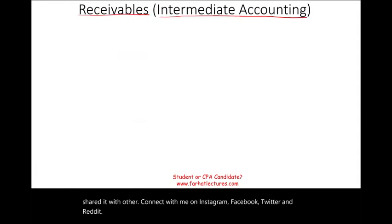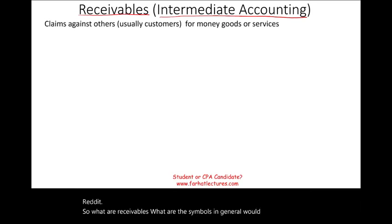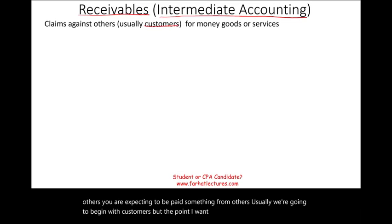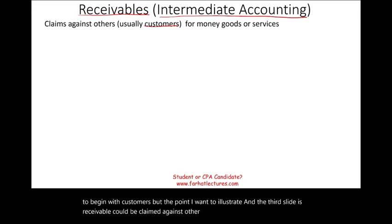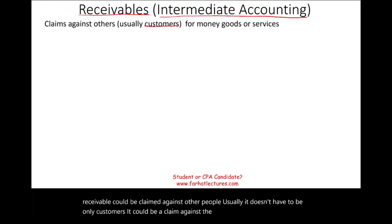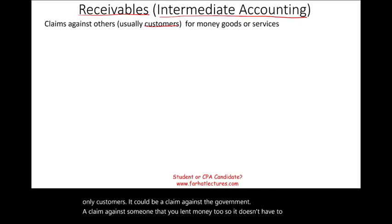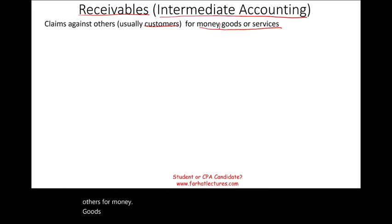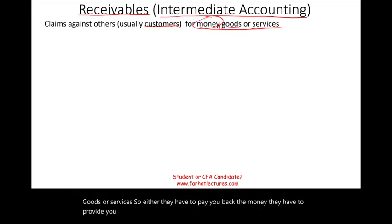So what are receivables? They are claims against others — you are expecting to be paid something. Usually we deal with customers, but receivables could be claims against the government or someone you lent money to. It's a claim against others for money, goods, or services: either they pay you back money, provide you goods, or provide some service.